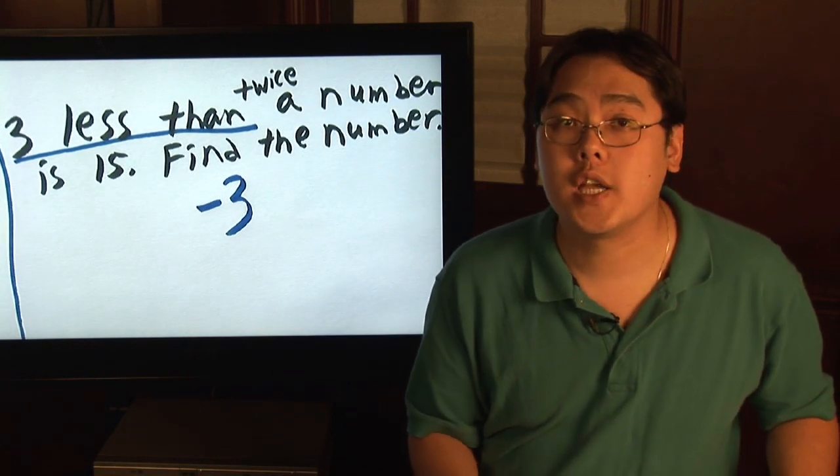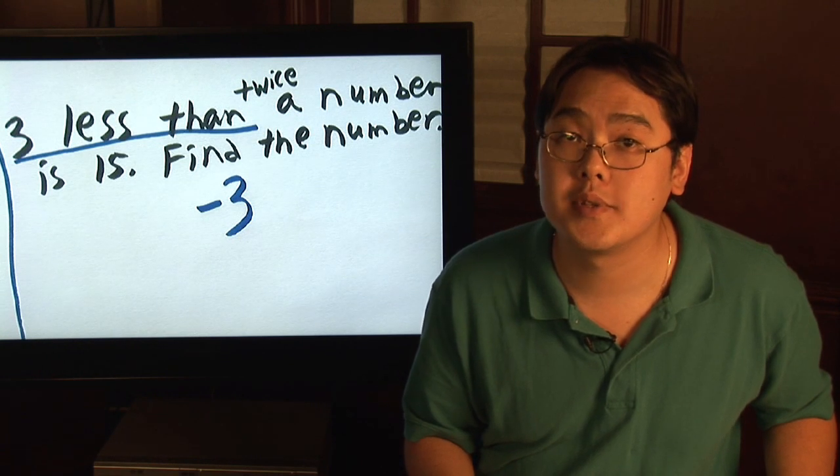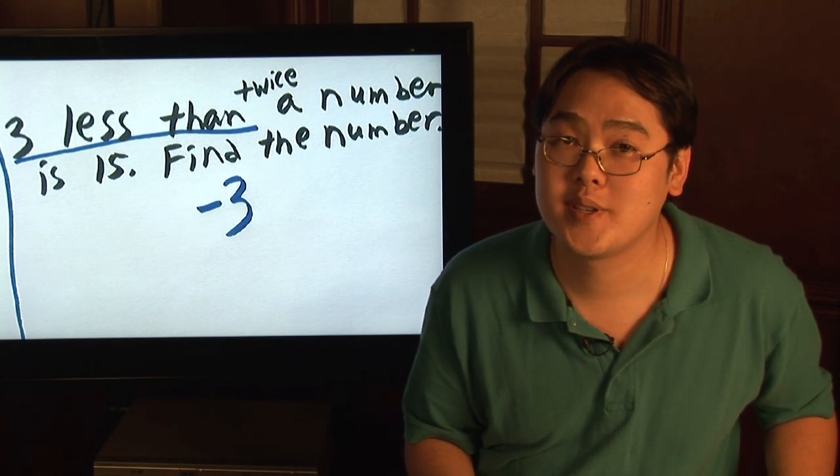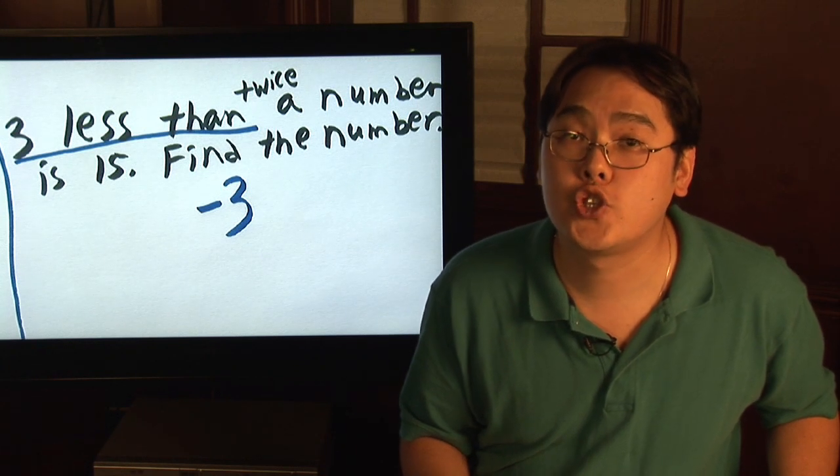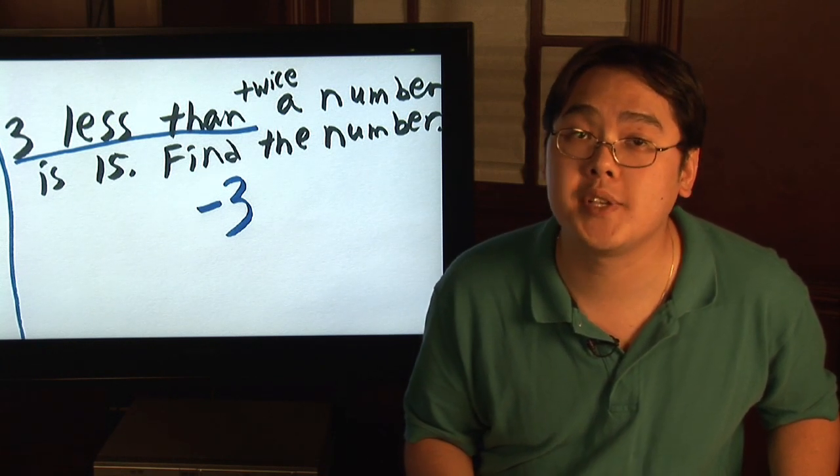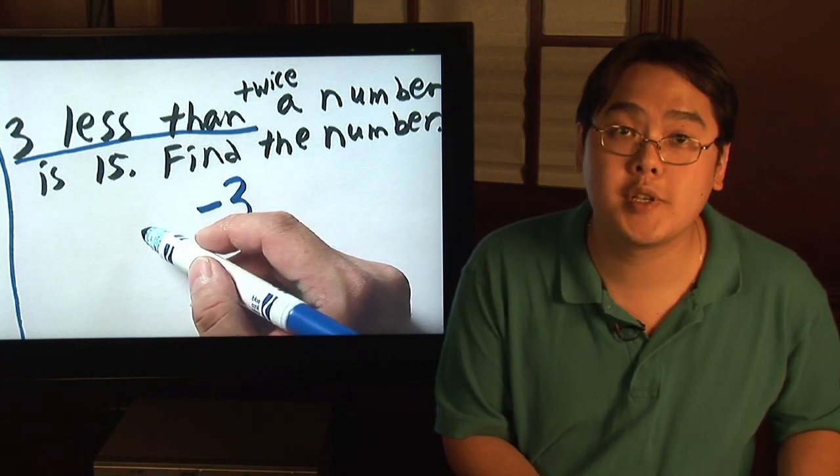Twice a number. If you do something twice, you're going to do something two times. Did I say two times? That's exactly how you finish off the left side. Twice a number means two times a number, so that means there's multiplication involved.